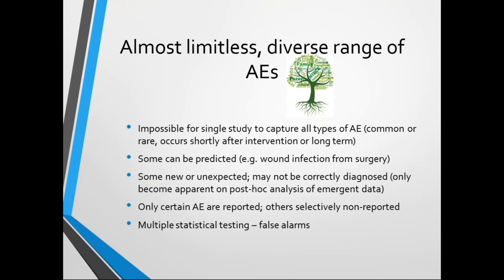That's already a long list of problems when trying to conduct a systematic review of adverse effects. Another problem reviewers constantly run into is: where do we start? This creates major challenges because there's an almost limitless, hugely diverse range of adverse effects. For a single trial to capture all types—whether common or rare, or whether the adverse event occurs shortly after the intervention or in the long term—it's very, very difficult for any single study to reliably capture all these diverse adverse events.